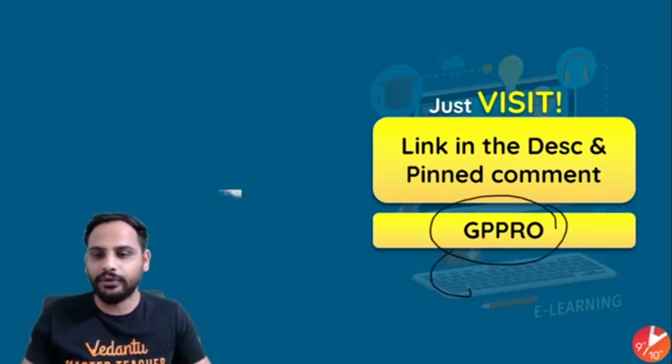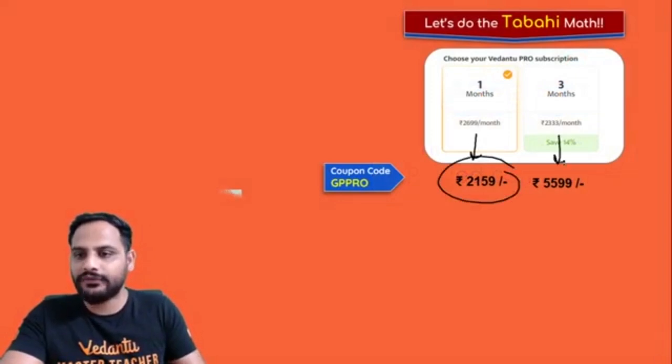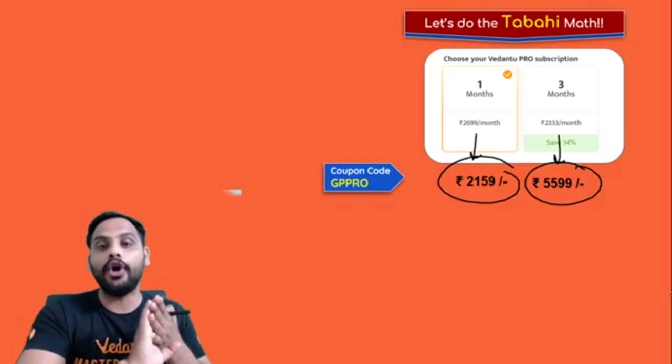Apply the coupon code GP PRO and you'll get 20% off. After 20% off, you can see the price for 1 month and price for 3 months. Remember, these prices include all the subjects.